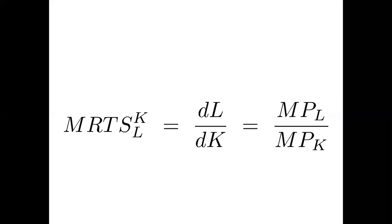Now let's see the formula. MRTS KL — where K stands for capital and L for labor — is equal to delta L upon delta K, where delta denotes change. It is also equal to MPL upon MPK, where MPL is the marginal product of labor and MPK is the marginal product of capital. This is the formula used to define the slope of an isoquant, which represents combinations of labor and capital yielding maximum output at minimum cost.